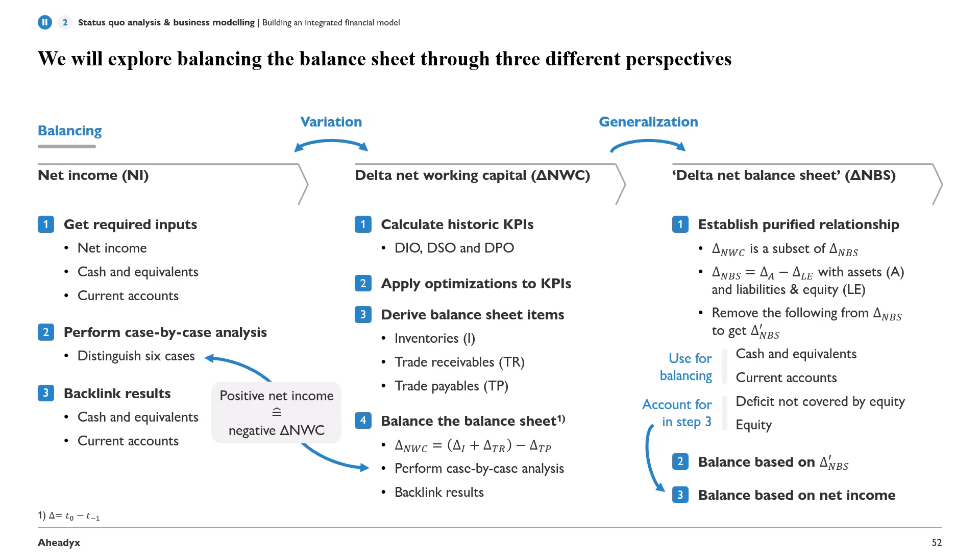In this delta net working capital balancing phase, we will first calculate the historic KPIs — days inventory outstanding, days sales outstanding, and days payables outstanding. I will also have an explanatory slide for those in case you don't know them. We will then apply optimizations to these, and from them derive the balance sheet items: inventories, trade receivables, and trade payables. Naturally, we then need to balance the balance sheet again, since we just imbalanced it by doing those optimizations.